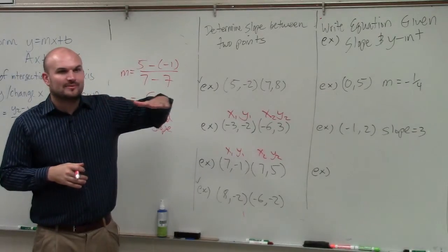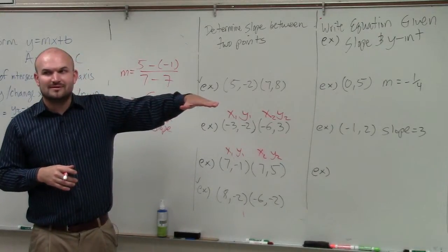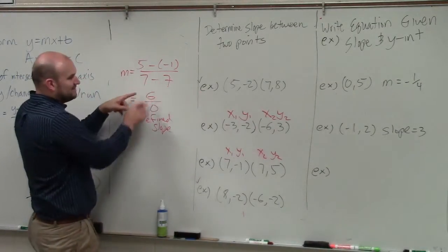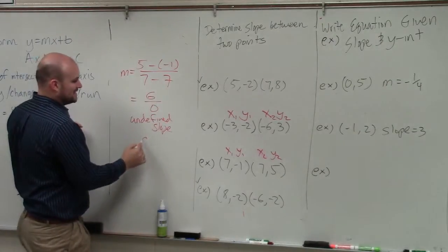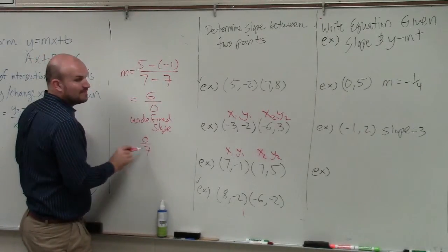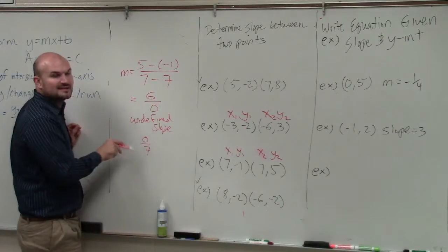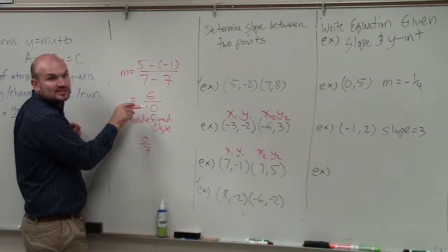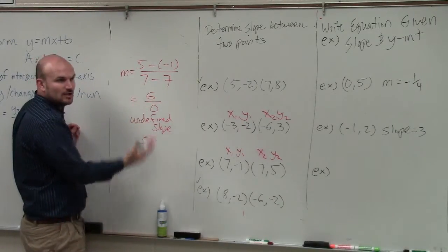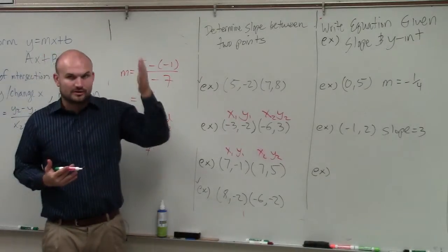And a horizontal line then would have a slope of 0. So basically, if this was like flip-flopped, if this was like 0 over 7, then that would create a horizontal line and the slope would be 0. But when 0 is in your denominator, it creates an undefined slope, which basically produces a vertical line.